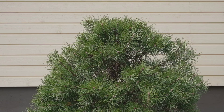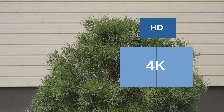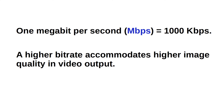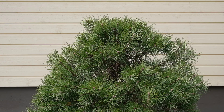I filmed a small pine tree by the wall using 4K at 200 Mbps and HD at 50 Mbps. This ensures that we have the same number of Mbps recorded for each pixel in both videos. The 4K video is exactly 4 times the size of HD video in pixels, and the Mbps value indicates how much information you can pack into the file for each second of video. I made two versions of videos — all were 2 seconds long — for both 4K and HD.